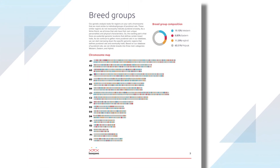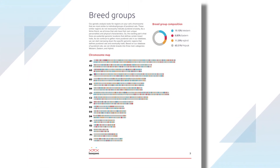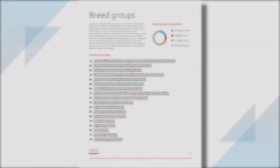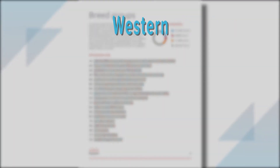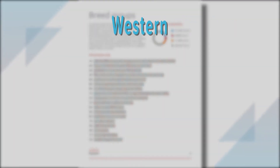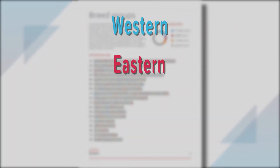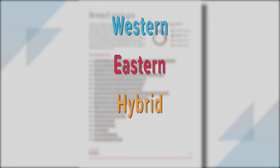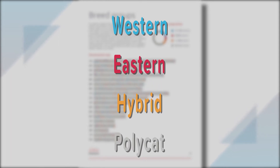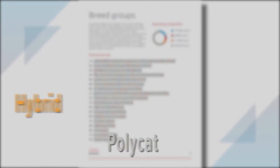Next, we move into the breed groups, where we break down your cat's genetic similarity. These breed groups are Western, from Europe and the Americas; Eastern, primarily from Asia; Hybrid, from wildcat crosses; and Polycat, yet unknown genetic combinations from years of natural reproduction.